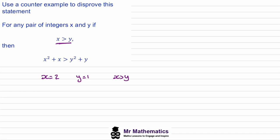Now we'll substitute these values into our second statement. We've got 2 squared plus 2, which is 6, is greater than 1 squared plus 1, which is 2. You can see that this statement is true, so it doesn't disprove the statement, but we can choose a different pair.